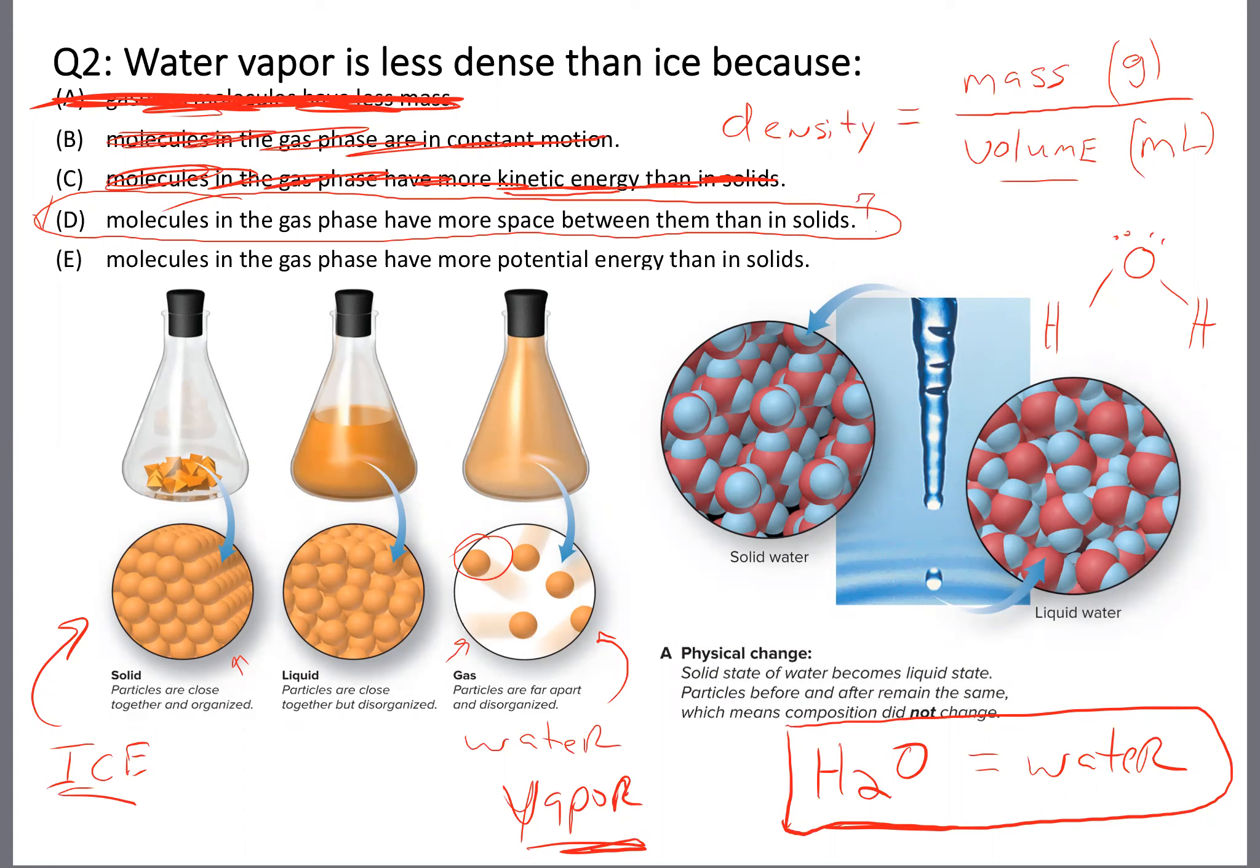What about E? Let's make sense of that. Molecules in the gas phase have more potential energy than in solids. That may or may not be true, but even if it is, I don't know that it explains our density difference. Density is always just a measure of how much mass we pack into a certain volume. So maybe they have more potential energy, but it seems like it's not so important for density. So I think the only reasonable answer here is D.